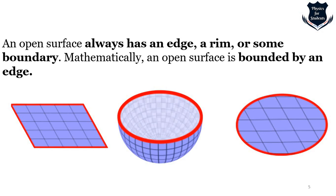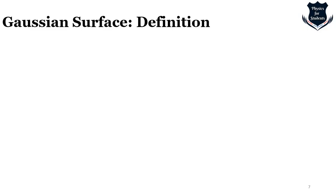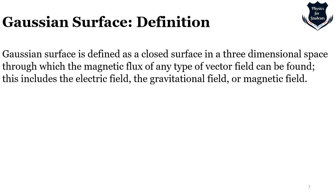A Gaussian surface is basically a closed surface. It is any closed surface used to calculate the flow of any fluid or field — electric or magnetic — entering or leaving a source located inside or outside the surface. More precisely, it is a closed surface in three-dimensional space through which the flux of any type of vector field can be calculated — whether electric, gravitational, or magnetic.